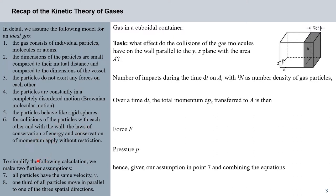To simplify some of the maths we'll be going through, I will include two further assumptions. Number seven and eight: all particles have the same velocity v — we will see later in the course why this might not necessarily be a good assumption, but it will simplify the maths right now. And one third of all particles move in parallel to one of the principal axes x, y, or z.